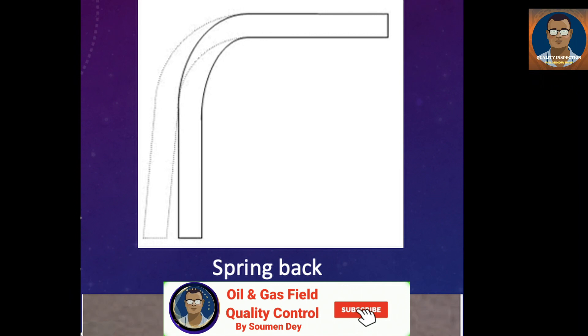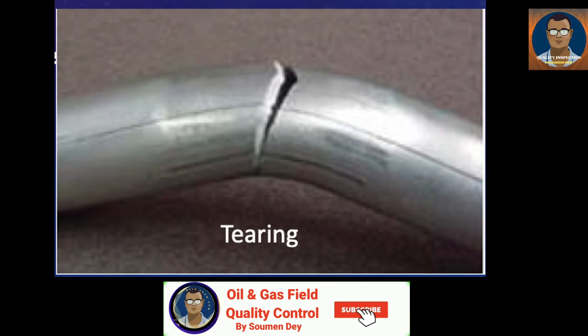Spring back: when the bending process is complete, the residual stresses in the body of the bent tube will cause relaxation in the part, which decreases the degree of bending. To solve this, the initial degree of bending might be increased based on simulation results. Another solution is increasing the elastic modulus E of the tube material — increasing E makes the part more rigid, resulting in less loosening after forces are removed. Tearing: tearing may occur in parts with small bending radius, as bent parts cannot withstand the tensile forces generated on the outer side of the tube.